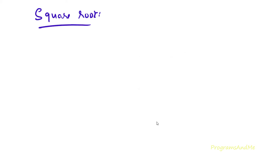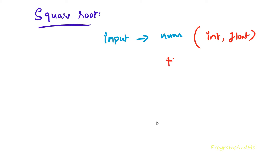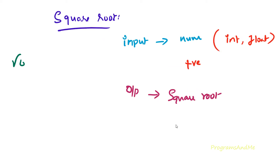The input of this program is a number — we can take an integer or float number, but we need to take a positive number. We are calculating the square root of a positive number and will get the square root as the output. A square root of a number is a value that when multiplied by itself gives the same number. For example, the square root of 4 is 2.